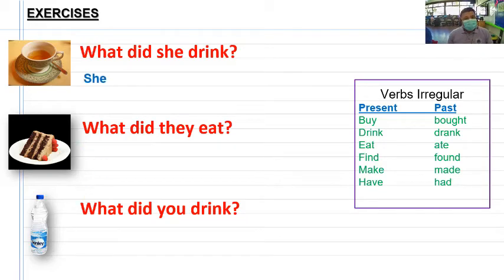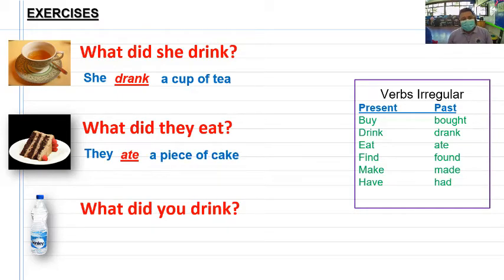Veamos otro ejemplo más. What did she drink? Qué ella bebió? She drank. Ahí tengo el verbo en pasado, a cup of. Ella bebió una taza de café. What did they eat? Qué ellos comieron? They ate a piece of cake.